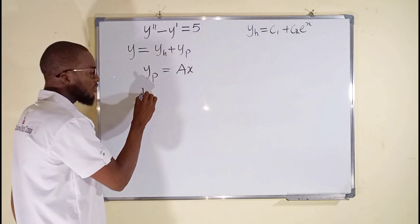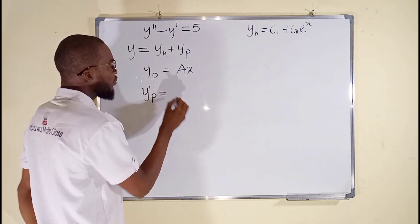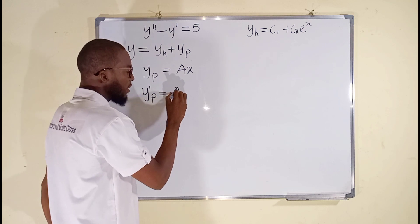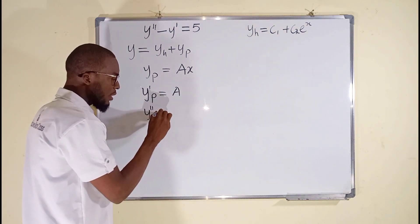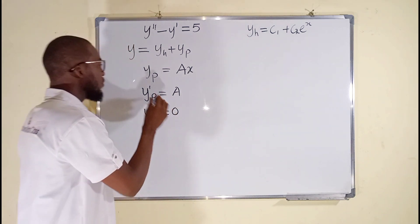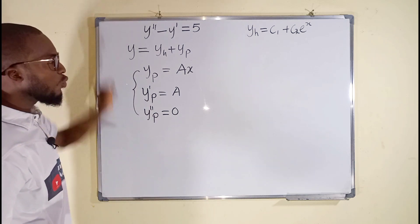We are going to take the first derivative. y prime of p equal to, differentiating this, you have just a constant, a. You take the second derivative, y double prime. You know, if you differentiate any constant, you get zero. So these are the three information we are going to substitute into original equation.